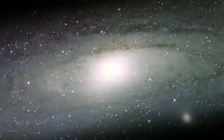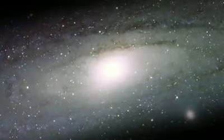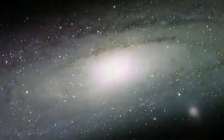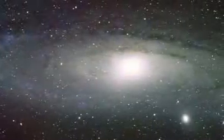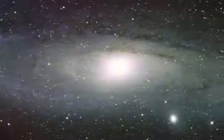This is M31, the nearest large spiral galaxy to our own. It's about 2.5 million light-years away and more than 220,000 light-years across.